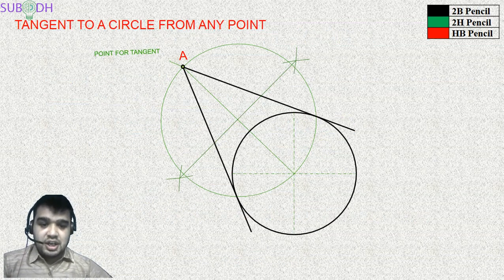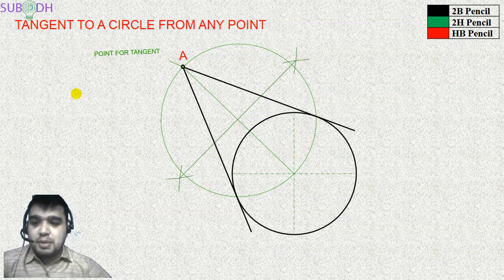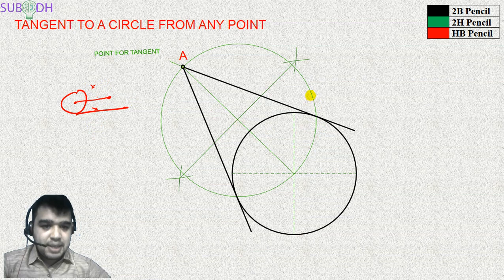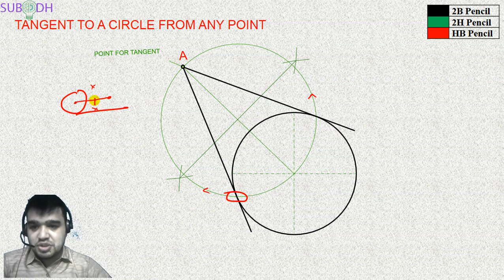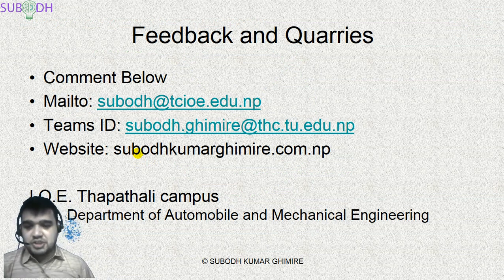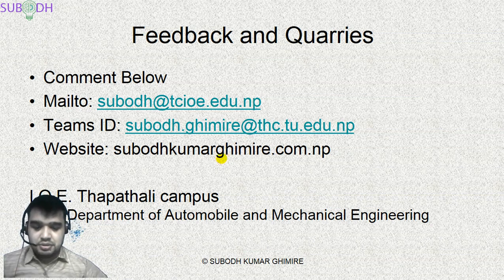Based on these two geometric analogies — radius perpendicular to tangent, and angle in a semicircle — we can construct a tangent to a circle from an external point. Step one: join center to the external point. Step two: perpendicularly bisect that line. Step three: draw an arc from the midpoint to find the tangent points, then connect them. If you have any feedback or queries regarding the lecture, you can reach me at the address shown above. Thank you and happy learning.